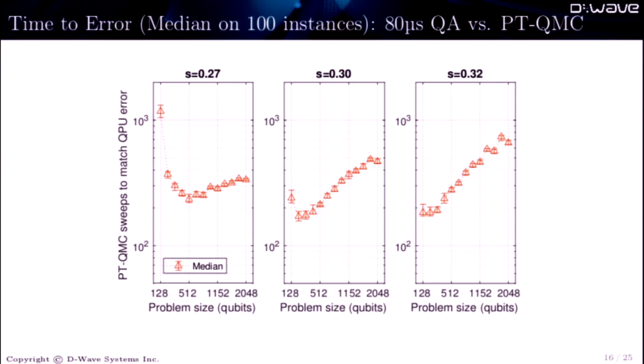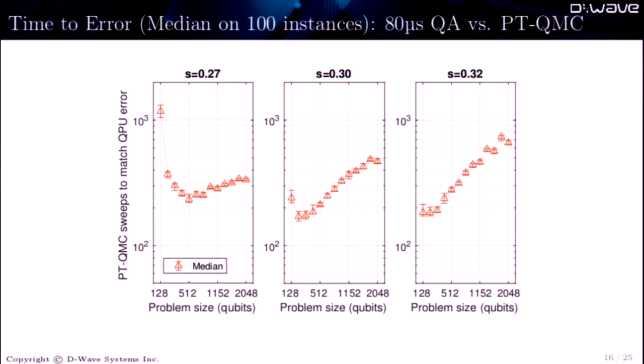So this was the first result that I was sort of very excited about. So PTQMC was pre-tuned with these models and so forth. And we ask how long it takes to get the same error that's coming out of D-Wave. And for larger S, which are sort of the harder, more multimodal problems, seems to be taking longer. And it also tends to be going up with system size. It's true not only in the median, it's true in the quartiles.